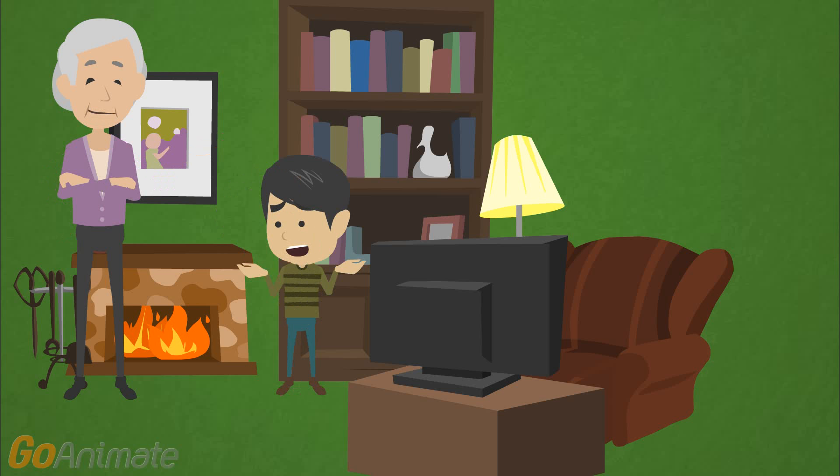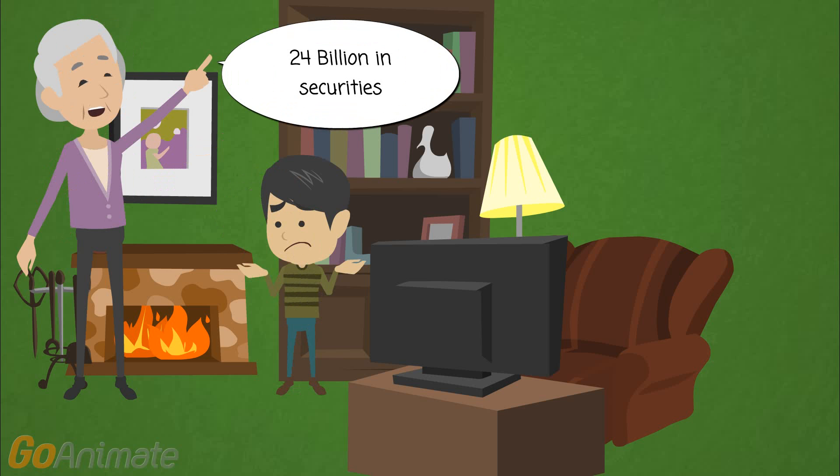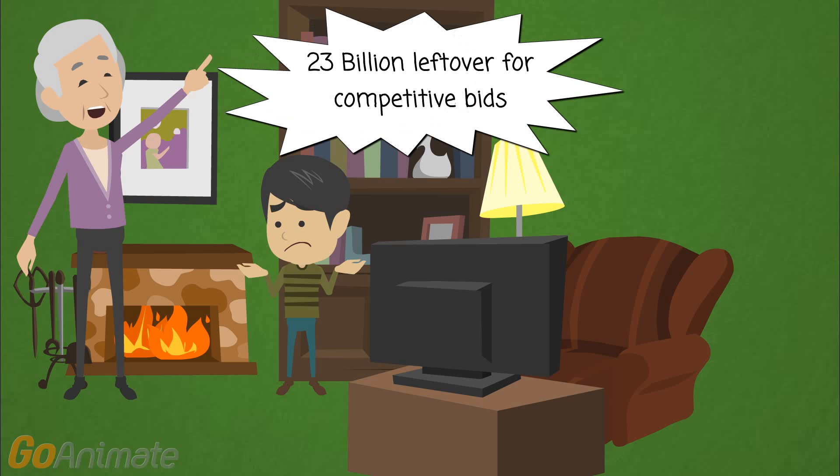Can we do an example with actual numbers? Sure honey. Let's say that the Treasury is auctioning off $24 billion in securities. First we look at non-competitive bids. Say lots of non-competitive bidders participated in this auction and if you add all their bids up, the total amount of non-competitive bids was $1 billion. We know that all these bidders get what they asked for, so there is $23 billion worth of Treasuries left over for competitive bids.